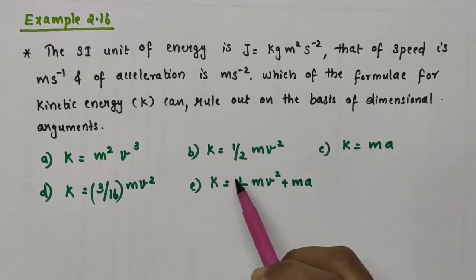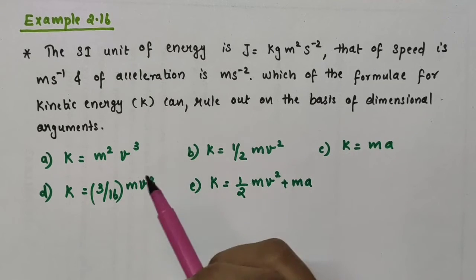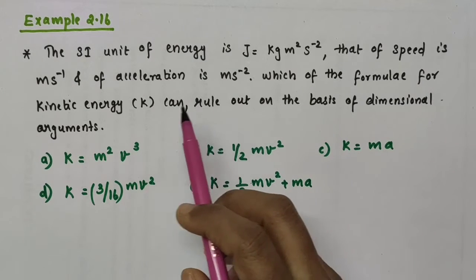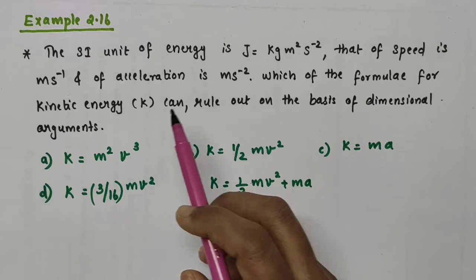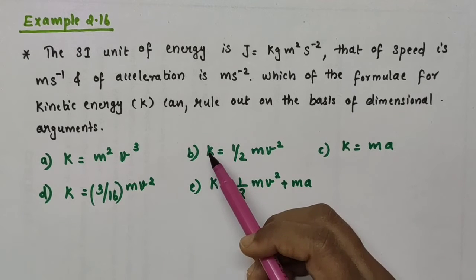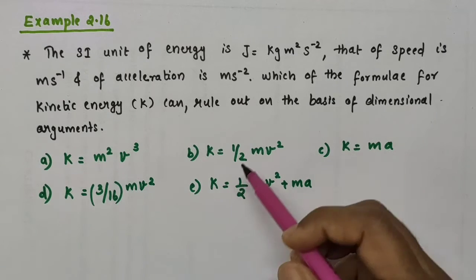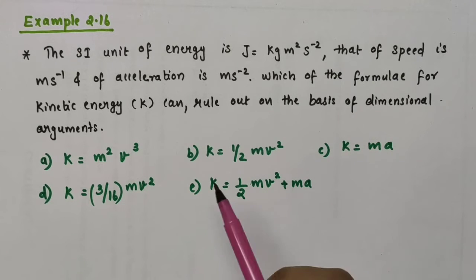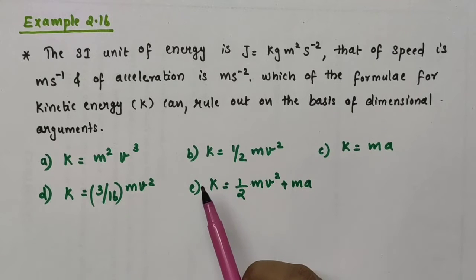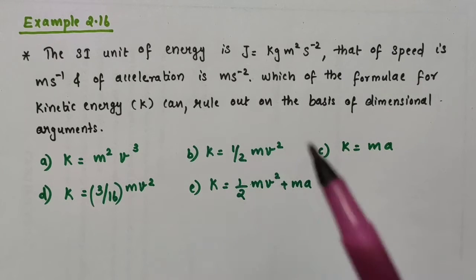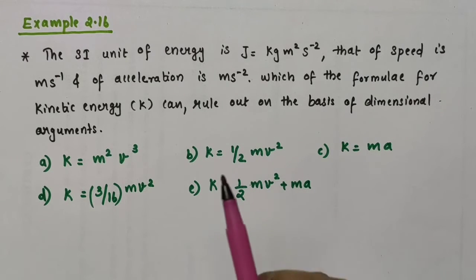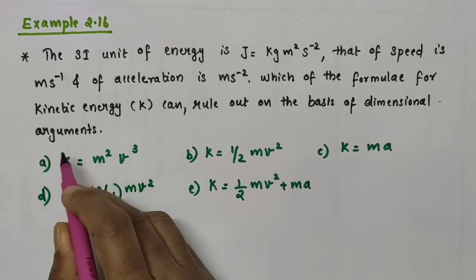Here you can see 1, 2, 3, 4, 5 expressions for kinetic energy. We want to find out which formulae can be ruled out on the basis of dimensional arguments — that is, we just want to check their dimensional correctness. Every correct formula must have the same dimensions on both sides of the equation, and only quantities with the same physical dimensions can be added or subtracted.